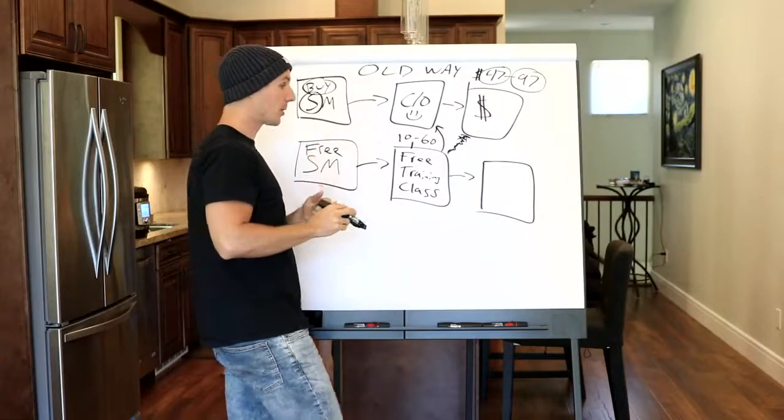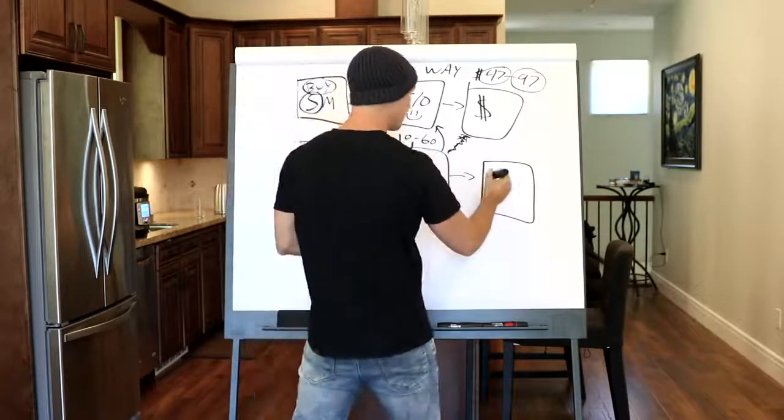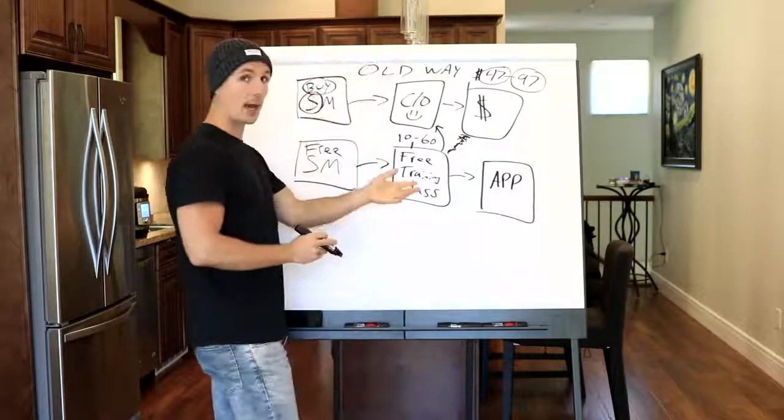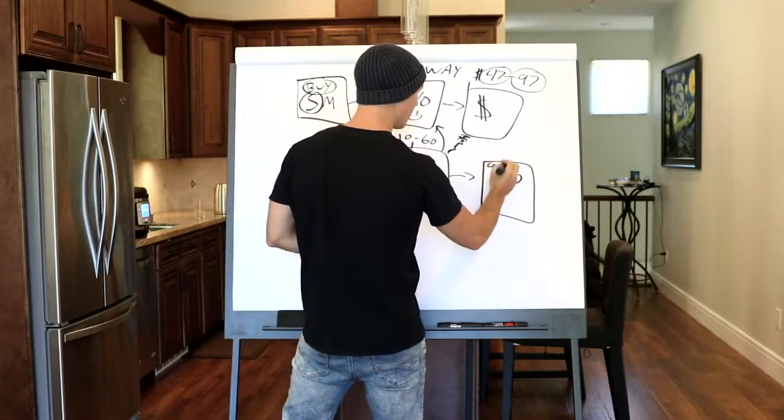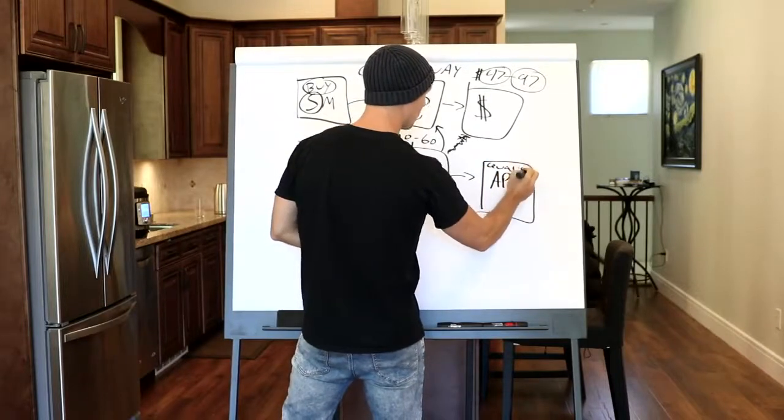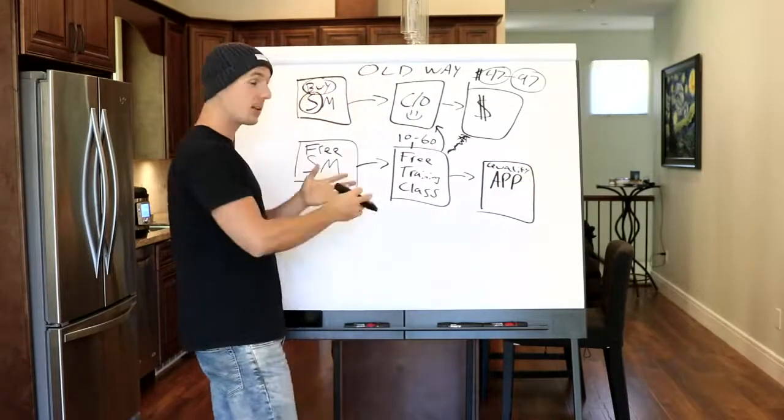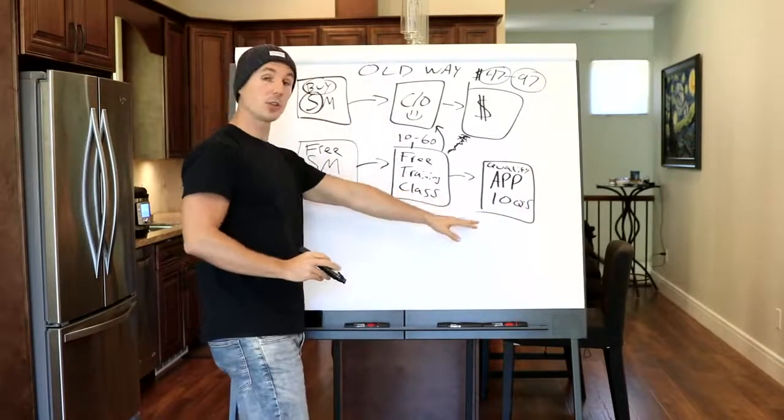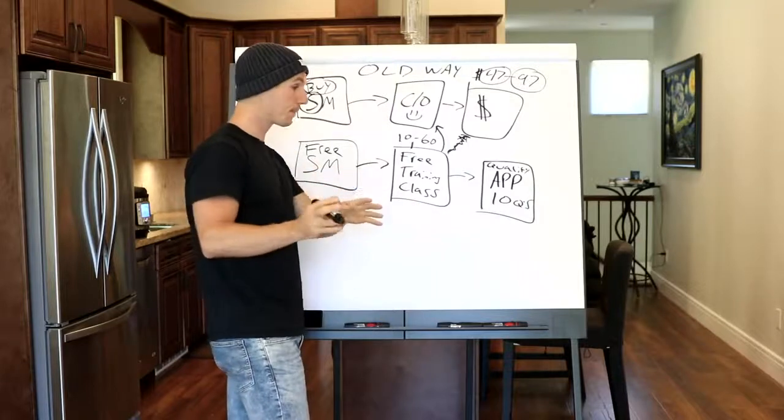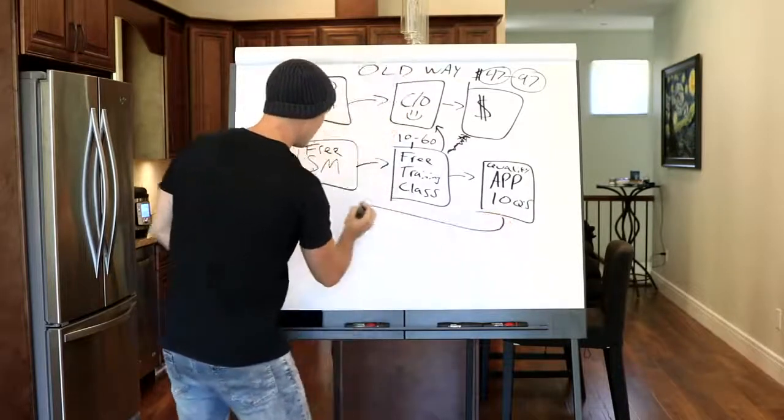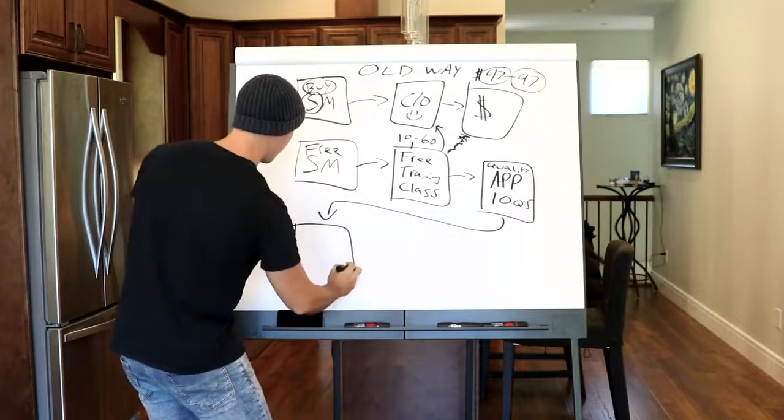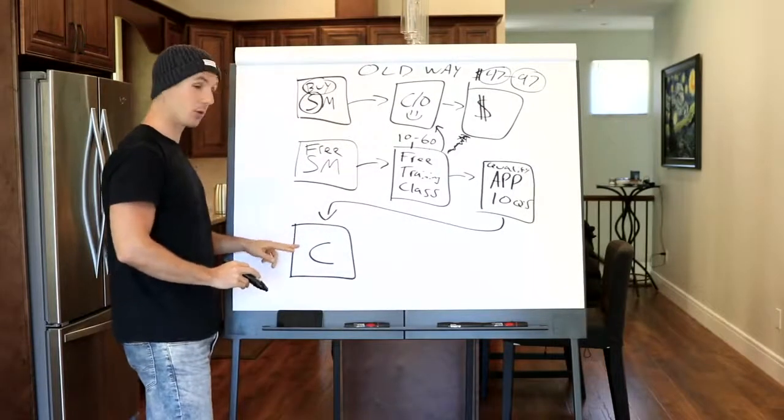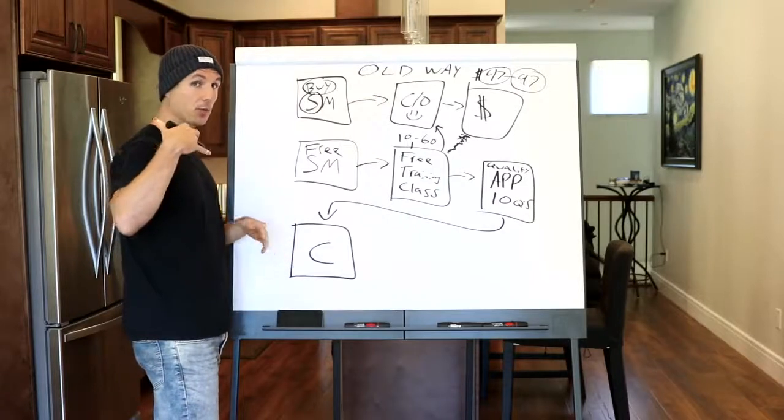So instead of what I recommend doing is sending people from your free training class over to an application, an application form. It's called an app or application form. You call it like qualifying app. Qualify app. And then there they answer like 10 questions. If they answer all 10 questions correctly to your liking, they then can get on a calendar page to actually pick a date and time to speak with you over the phone.